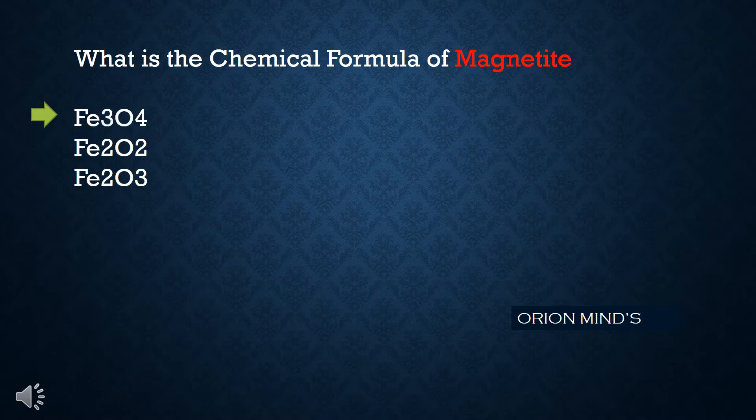What is the chemical formula of magnetite? The answer is Fe3O4.